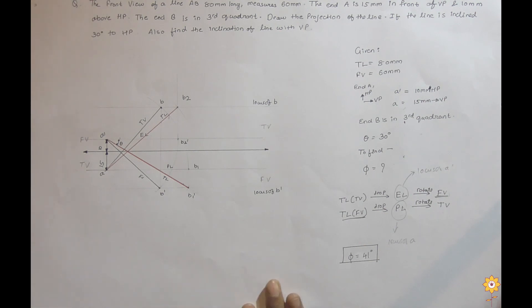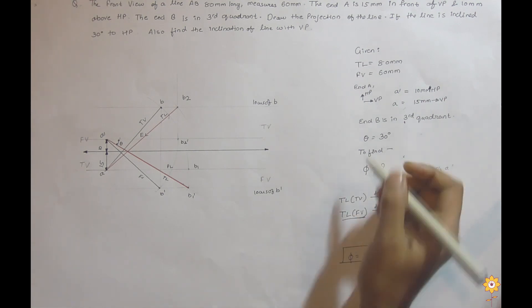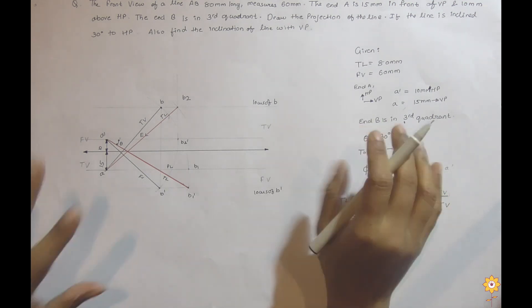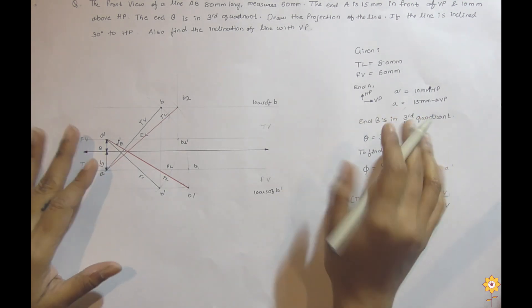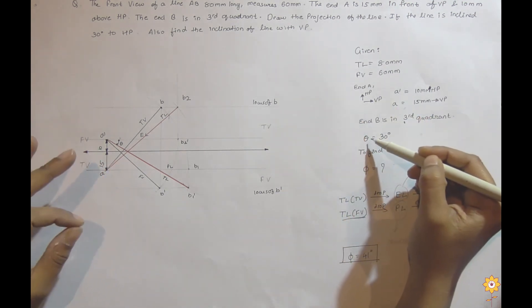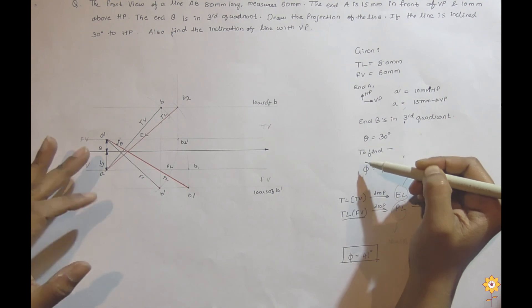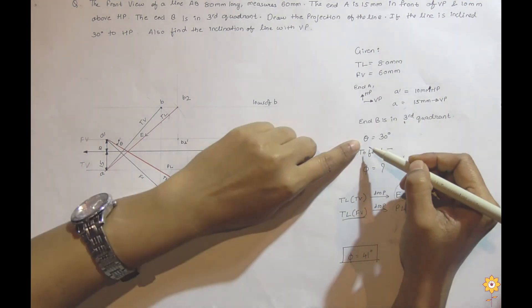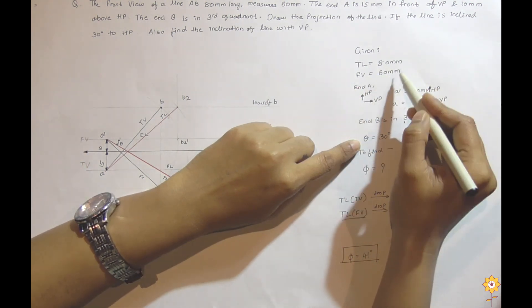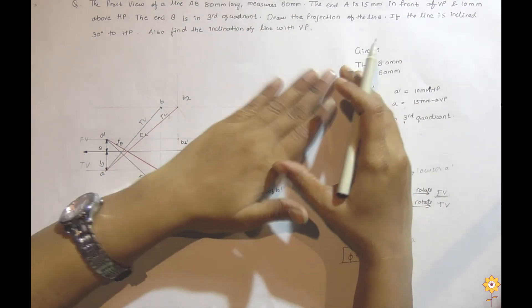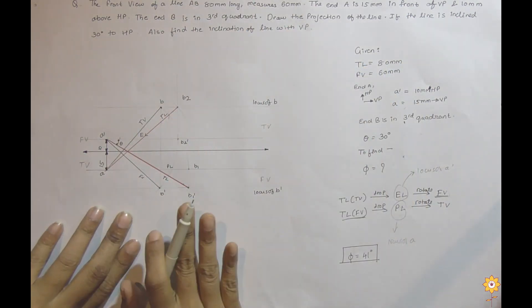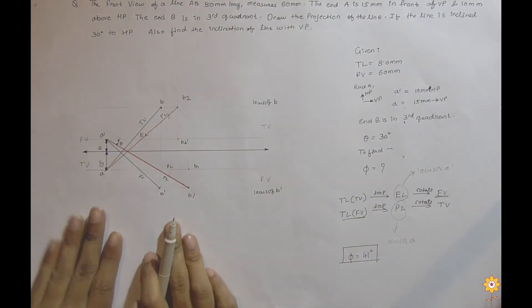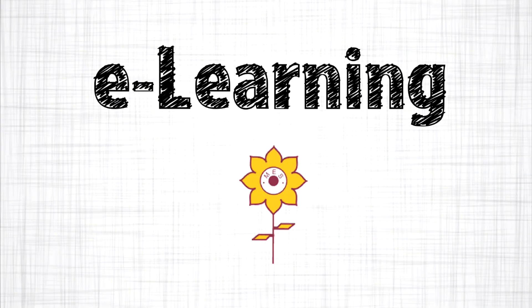This is how we solve a problem where data is given in discrete format — both angles theta and phi are not given together; one angle and the front view length are given. This shows how to combine the data and solve the problem. Thank you, hope you understood.